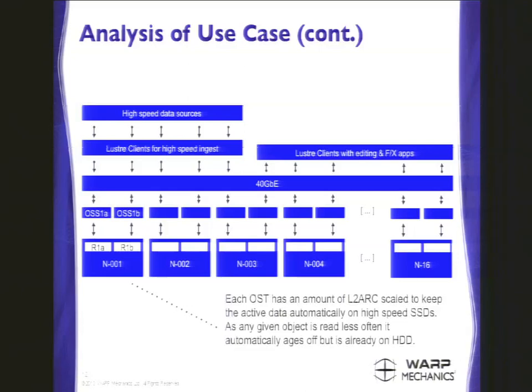The full system looks like this. High-speed data sources — movie cameras — are things that don't have Lustre clients. I would like it if movie cameras had Lustre clients, but they don't. Those have to go through Lustre client gateways to write into the file system. The L2ARC kernel tweaks essentially prioritize getting all of the writes onto SSDs immediately, instead of just a certain percentage of them. The system scales out pretty much as much as you want. This particular client only needed 16 OSSs.